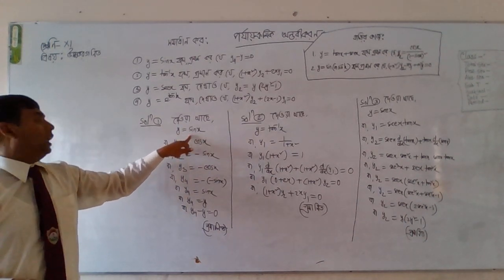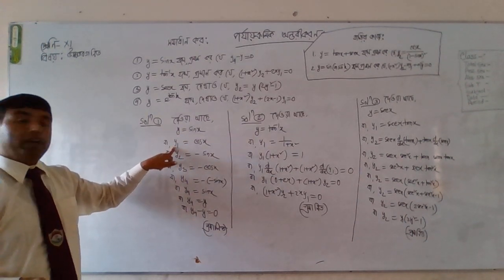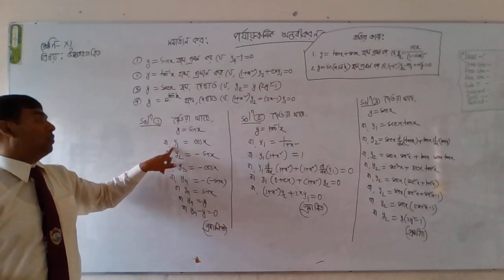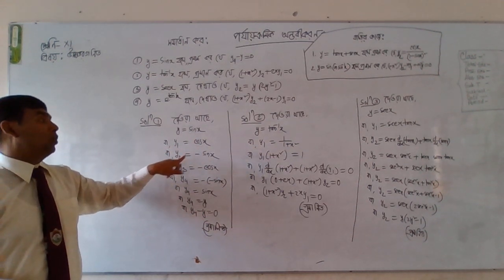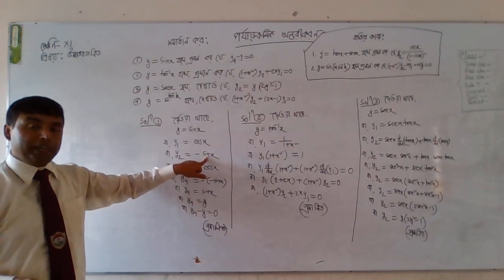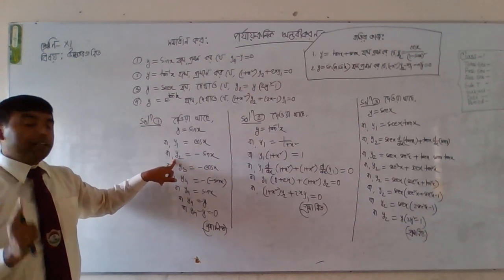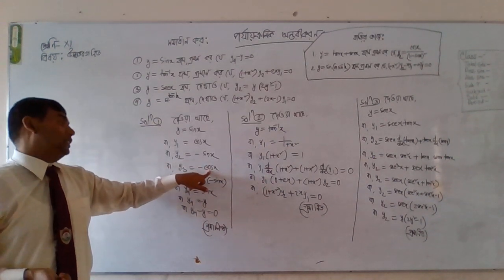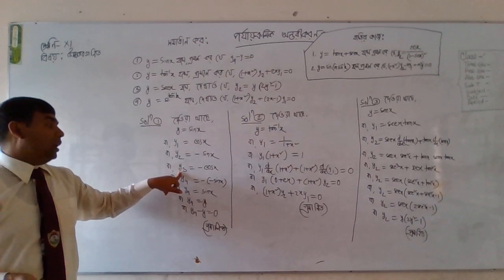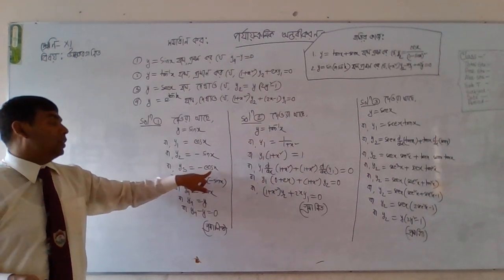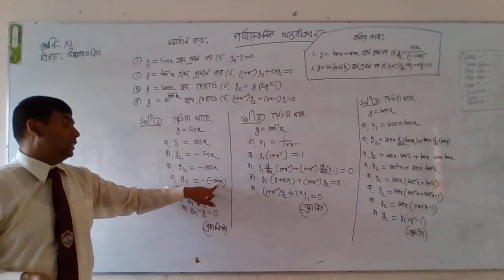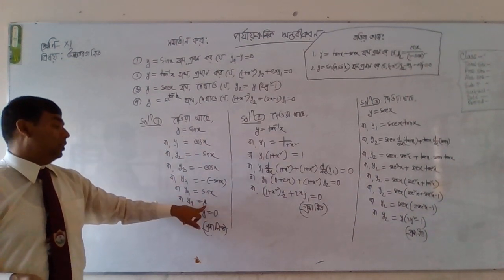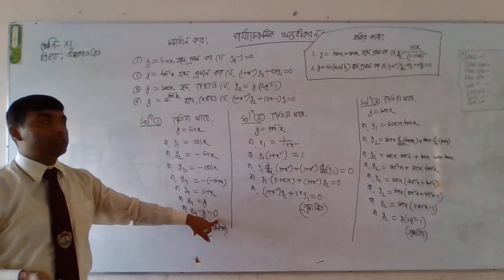y equal to sin x. y1 is defined as cos x, and y2 equals minus sin x. y2 minus y: minus sin x plus sin x — we can see sin x equal to y, so the result equals zero.